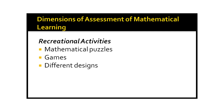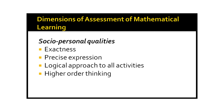There can also be recreational activities where students enjoy learning mathematics, which they might otherwise think is a dry subject. You can organize recreational activities — like mathematical puzzles, games, and different designs using mathematical concepts — and through these activities assess their mathematics learning. Then through their socio-personal qualities: it is said that a mathematics learner is very exact when he speaks, which reflects the transfer of concept learning into their socio-personal behaviour, showing whether learning has actually transferred into behaviour through precise expression, logical approach, and higher-order thinking.